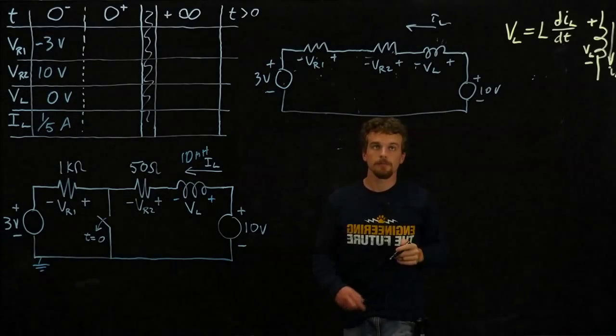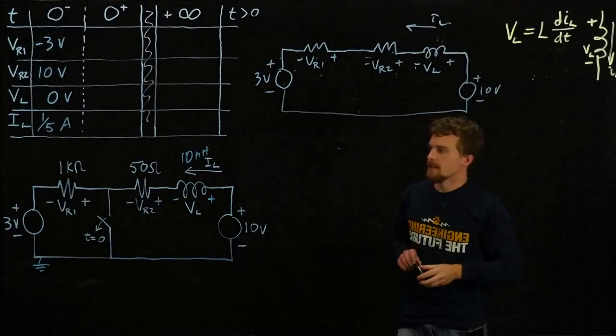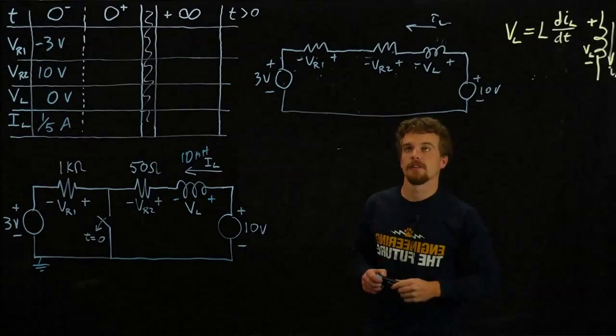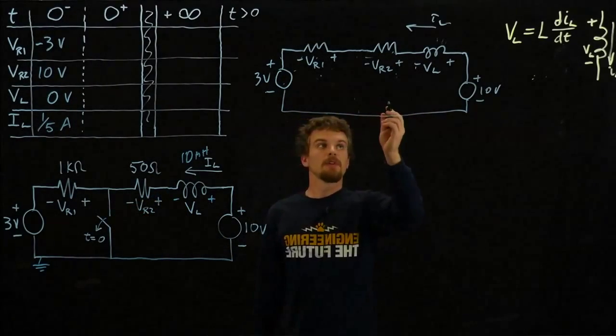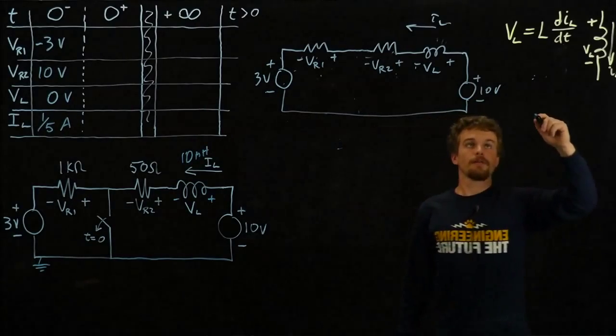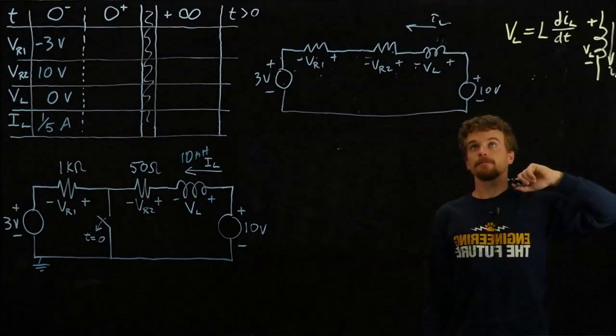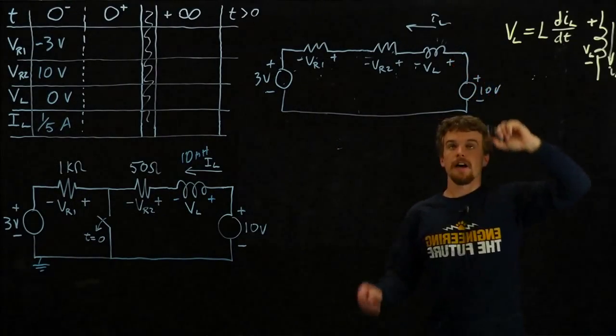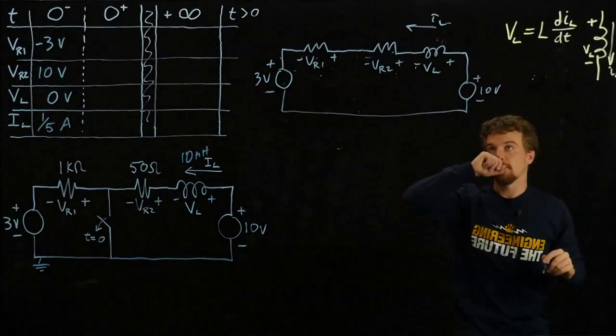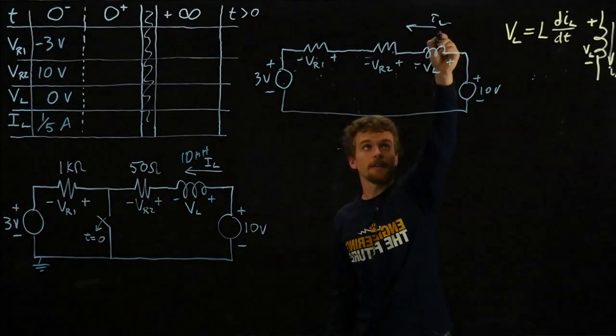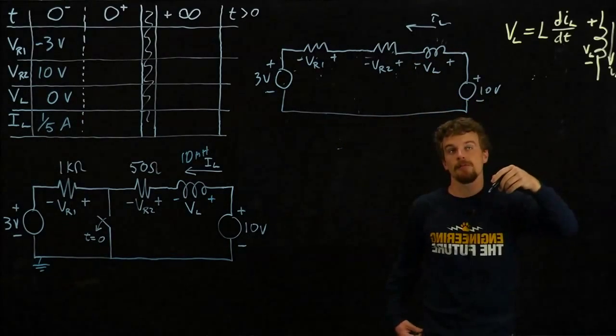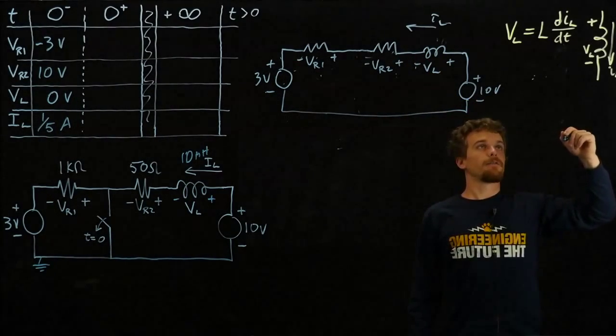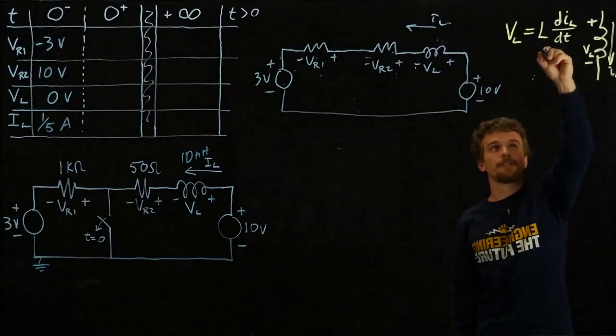Now we have this circuit. What can't change instantaneously between when that event happens? I_L can't change instantaneously. The current I_L is the same right after the switch opens as it was right before, but we can get that reasoning from this equation here.